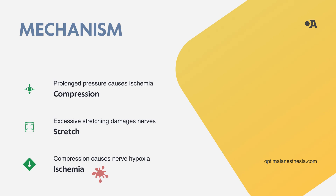Stretch injuries occur when a nerve is pulled or stretched beyond its normal limits. This can happen if a limb is held in an awkward position for too long or moved in ways that are not typical. For example, if an arm is held out to the side at a 90-degree angle or more, it might stretch the brachial plexus, a network of nerves that control arm and hand movements. Similarly, prolonged positions like the Trendelenburg position can stretch nerves in the lower body.